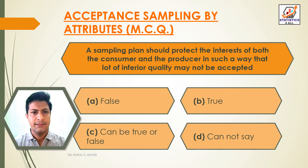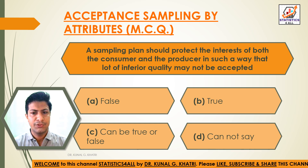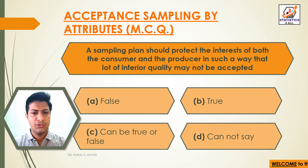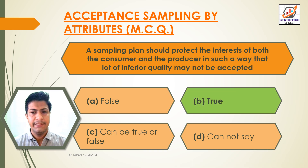Question 6: A sampling plan should protect the interest of both the consumer and the producer in such a way that a lot of inferior quality may not be accepted. Option A: False. Option B: True. Option C: Can be true or false. Option D: Cannot say. The answer is Option B — True.